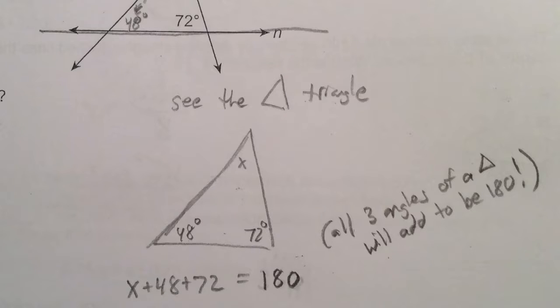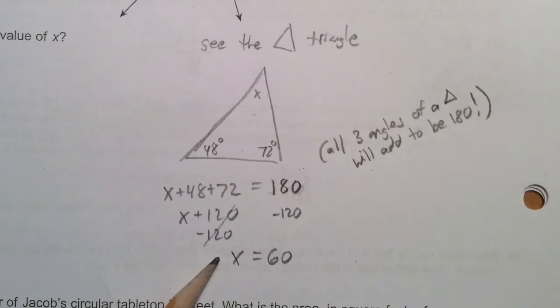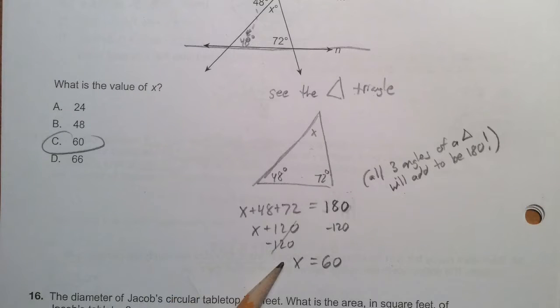So I set up an equation, X plus 48 plus 72 equals 180 degrees. So I solved the equation by getting the X by itself, and I found out that X had to equal 60 degrees, and its answer is C.